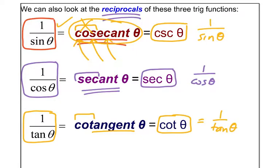So now we have six trig functions: sine, cosine, tan, cosecant, secant, and cotangent. Start to remember all six of those. And now we get to play.